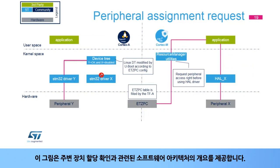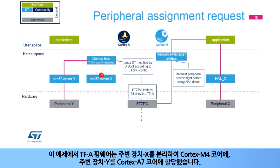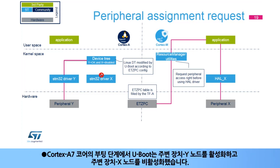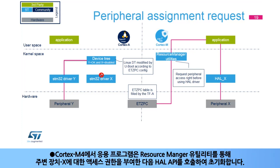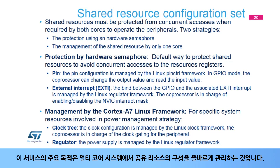This picture gives an overview of the software architecture related to the check of the peripheral assignment. In this example, the TFA firmware has isolated and assigned peripheral X to the Cortex-M4 core and peripheral Y to the Cortex-A7 core. On the Cortex-A7 core, during the boot stage, U-Boot has enabled the peripheral Y node and disabled the peripheral X node. As a consequence, only the STM32 driver for peripheral Y is enabled. On the Cortex-M4, the application grants the access right to peripheral X thanks to the Resource Manager utility and then calls the HAL API to initialize it.